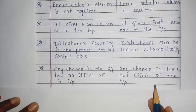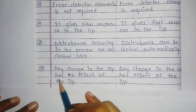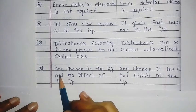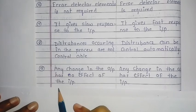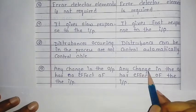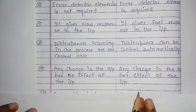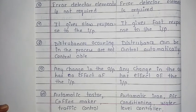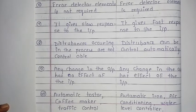The ninth point is the definition — already covered. Any change in the output has no effect on the input for the open loop system, and any change in the output has an effect on the input for the closed loop system. The tenth point is examples: open loop examples include automatic toaster, coffee maker, and traffic control.